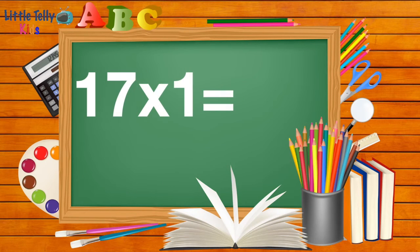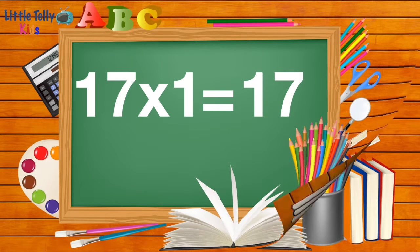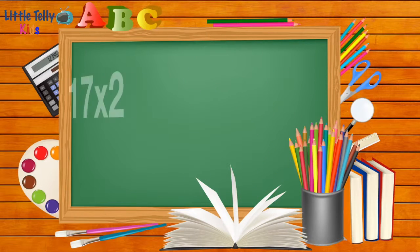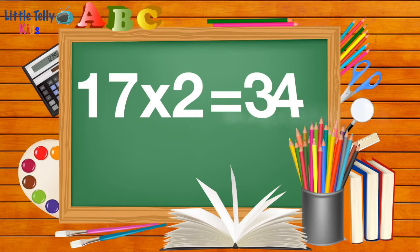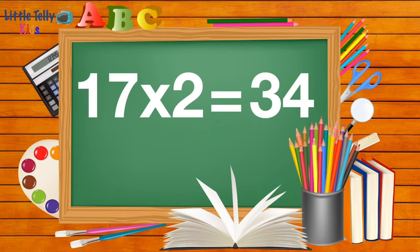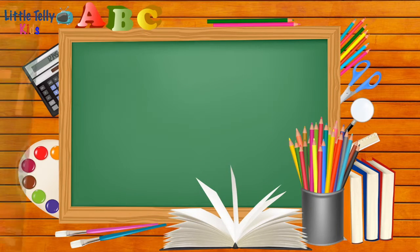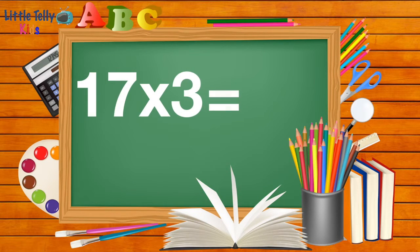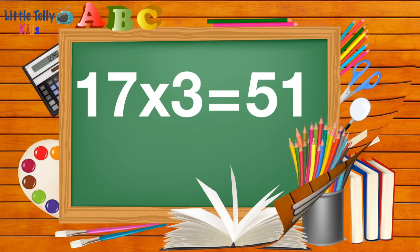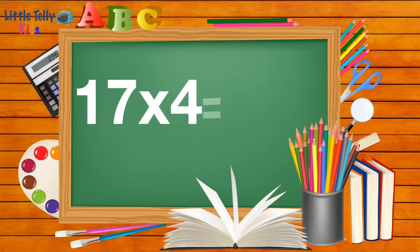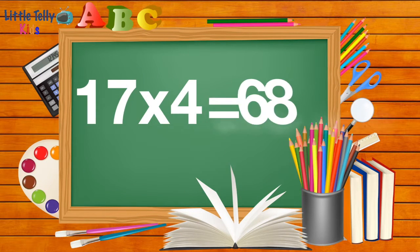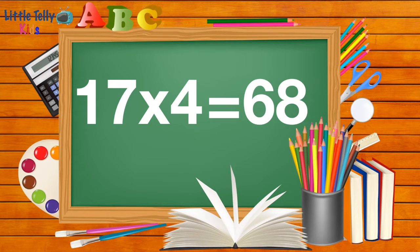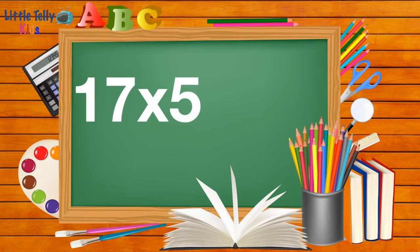17 ones are 17. 17 twos are 34. 17 threes are 51. 17 fours are 68. 17 fives are 85.